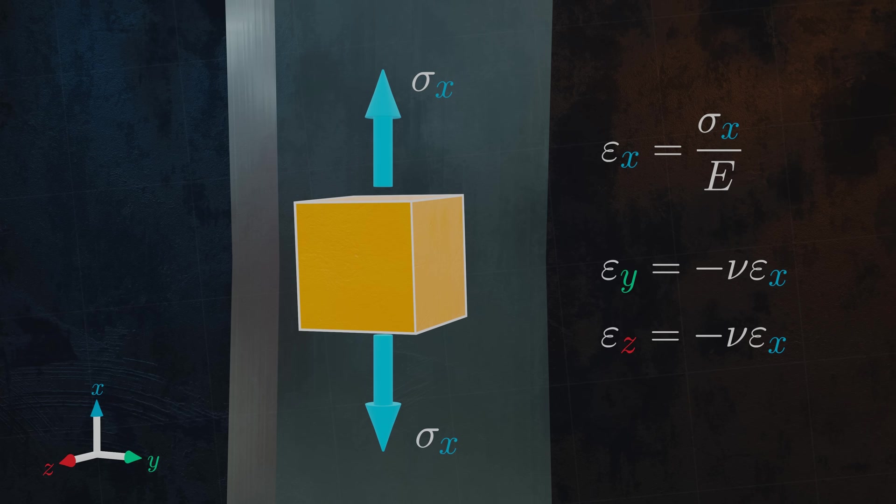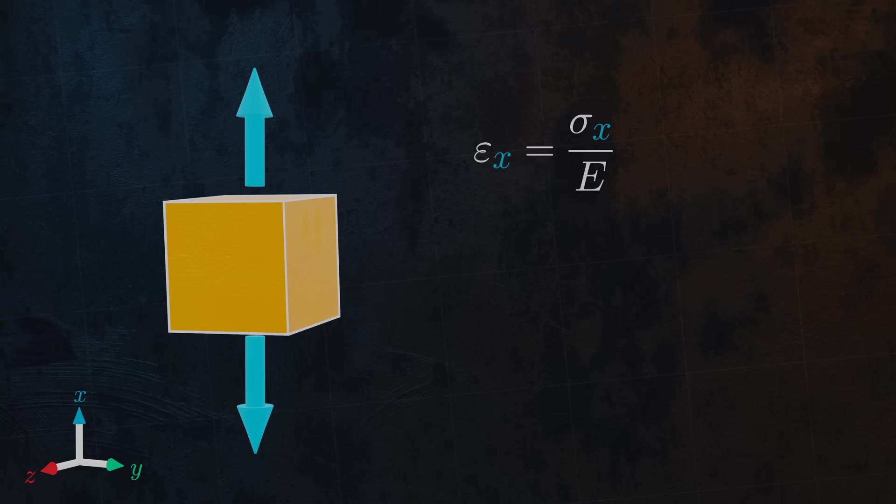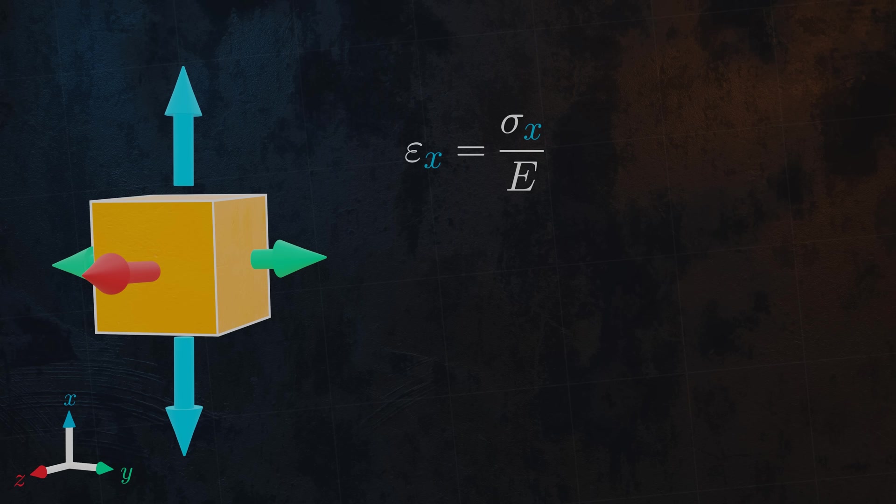But what if we look at a more complex case, where we have triaxial stress, with different stresses in all three directions? In this case, we can't just use Hooke's law to determine the strain in the x direction, because it will also be affected by the strains in the y and z directions. The simple version of Hooke's law for uniaxial stress no longer applies, because the strains in one direction will depend on the stresses applied in all three directions.